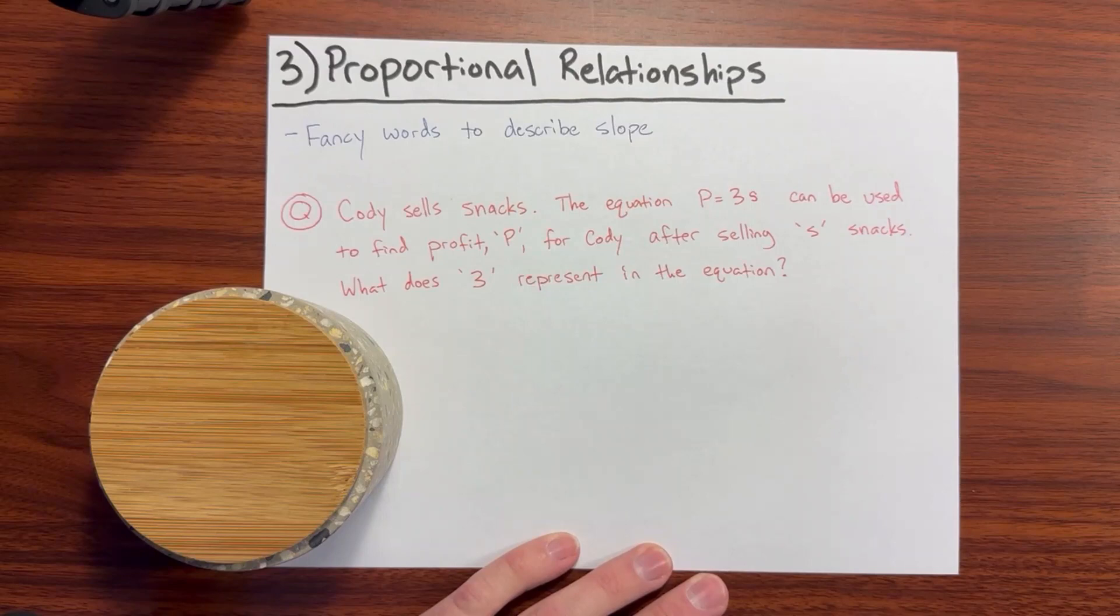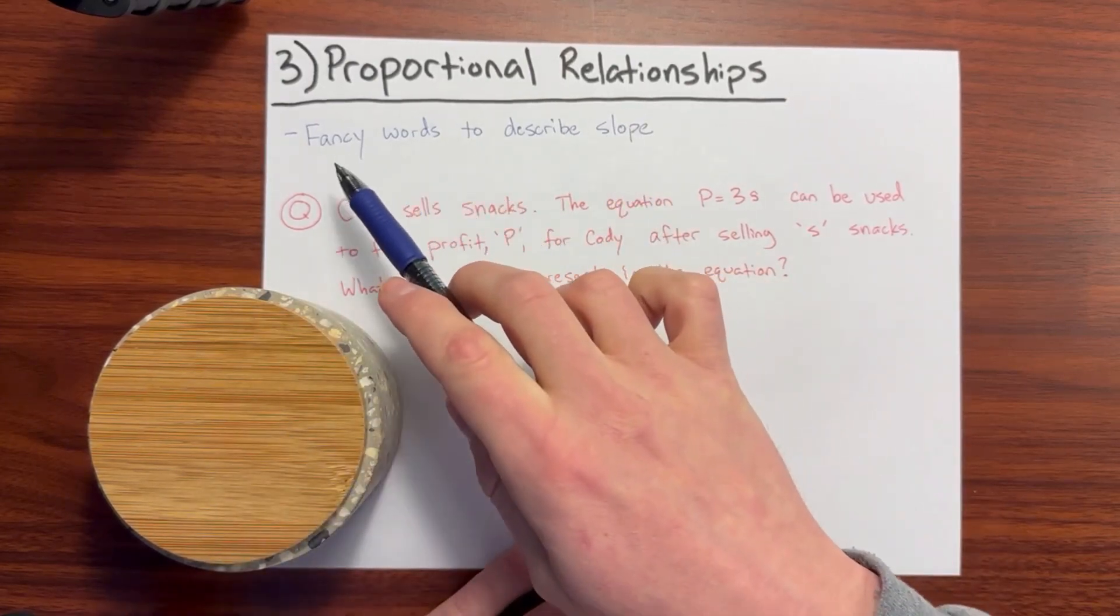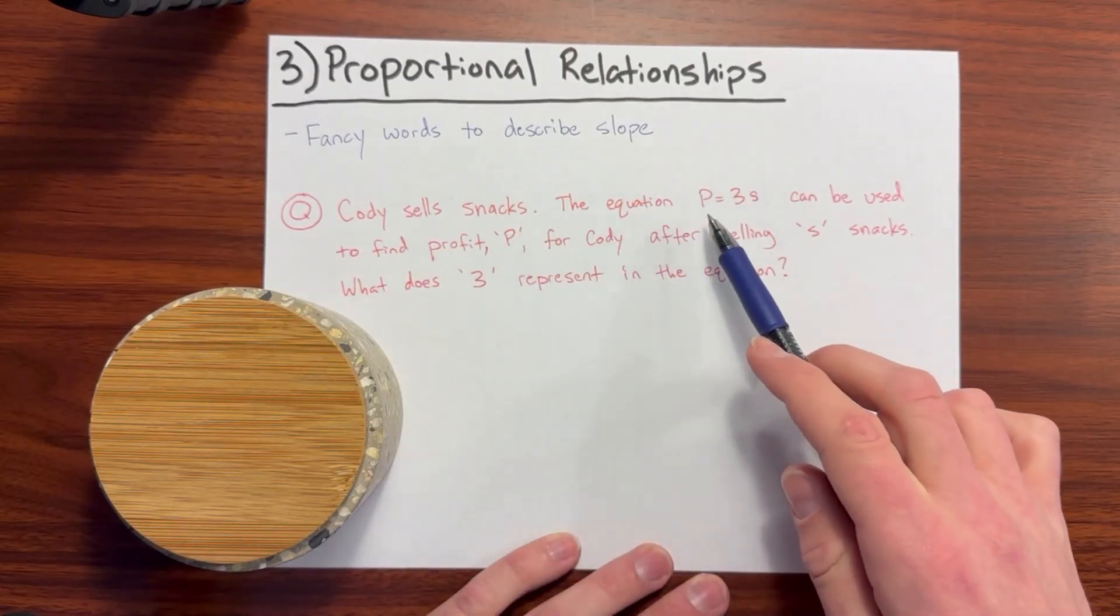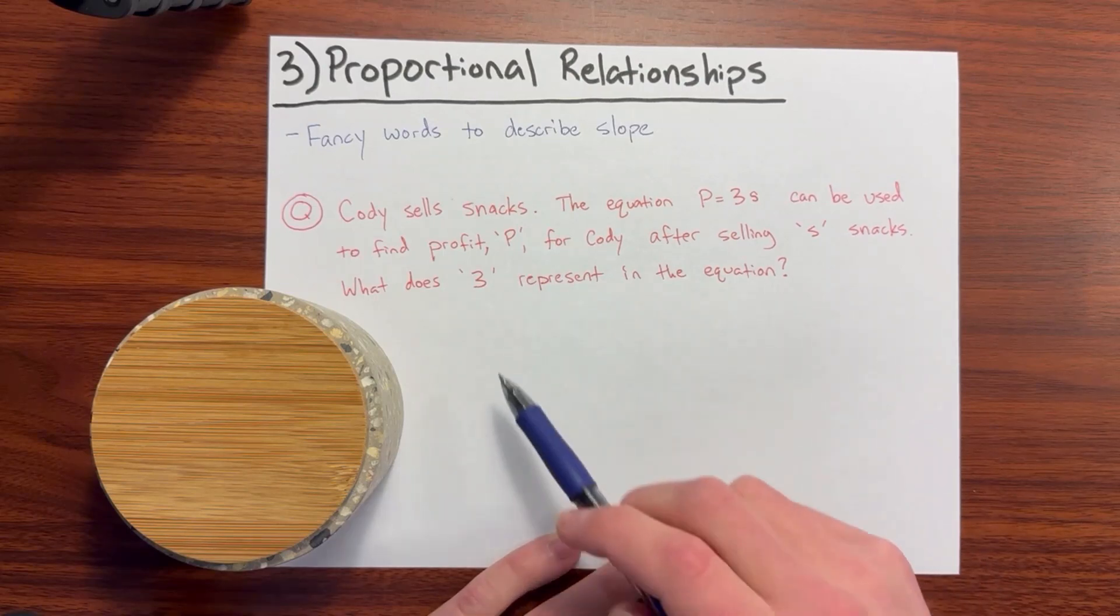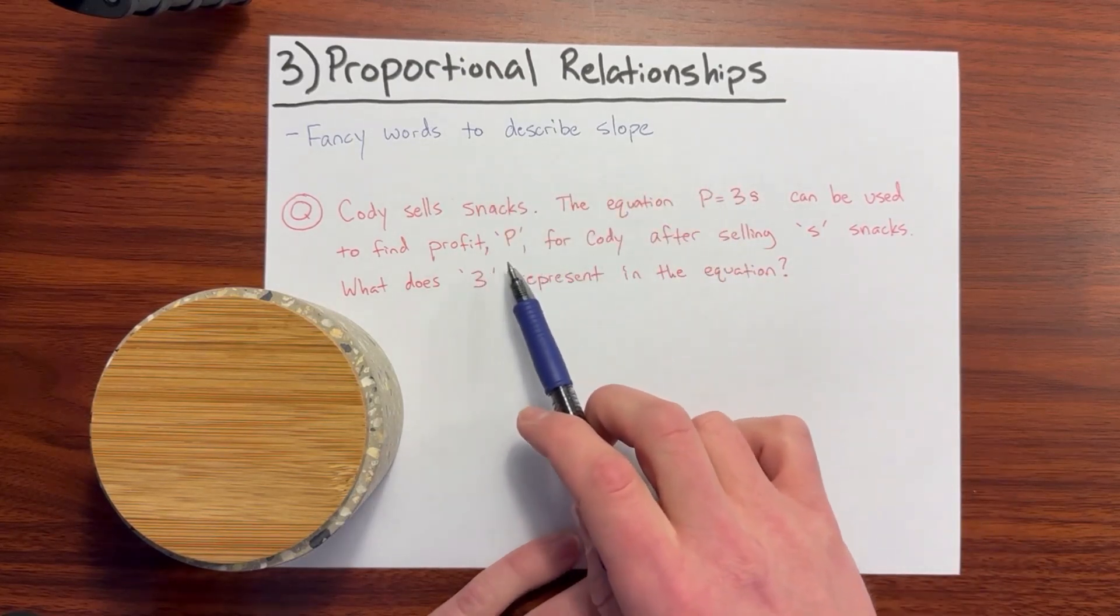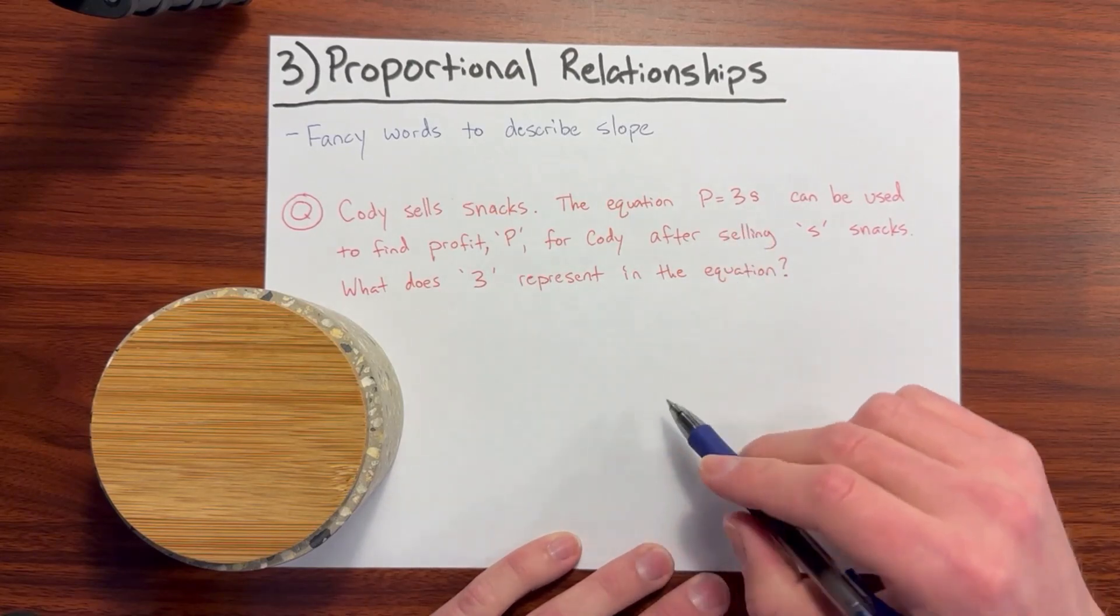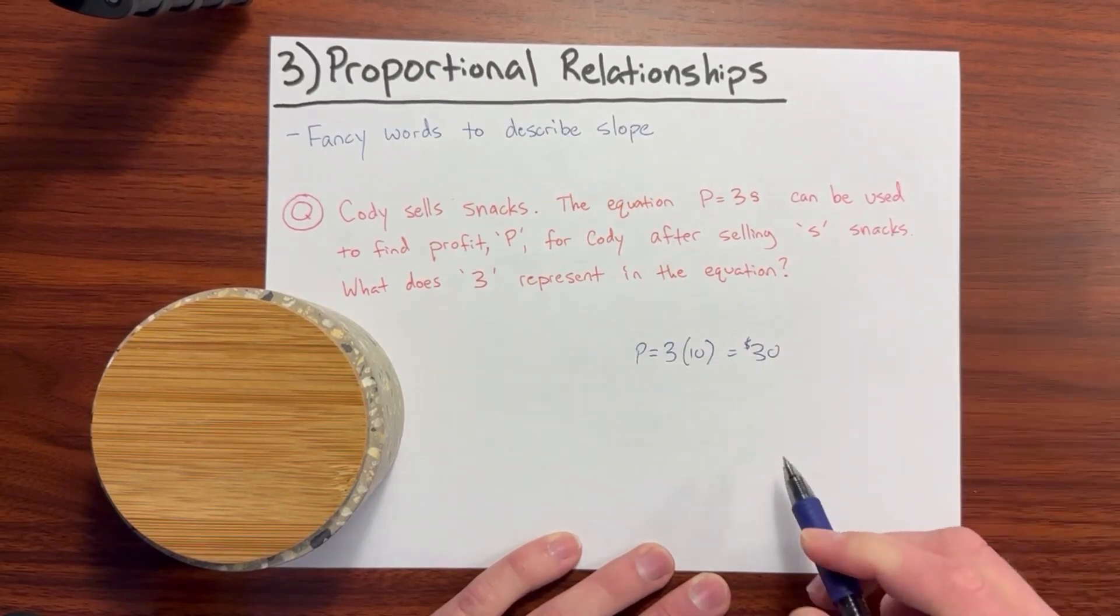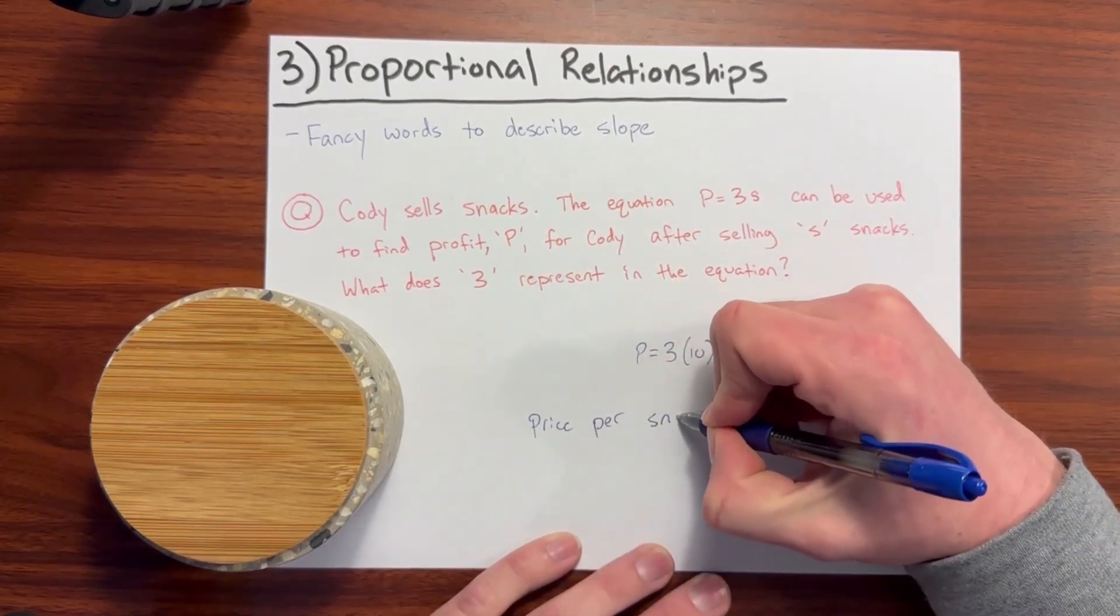Number 3: Proportional relationships for equations and graphs. A proportional relationship, all you need to know is that it's some fancy words to describe the slope. So a question could be, Cody sells snacks. The equation p equals 3s can be used to find profit p for Cody after selling s snacks. What does 3 represent in the equation? Well, 3 is the proportional relationship between Cody's profit and the number of snacks that he sells. So what does 3 represent in the equation? Well, let's say he were to sell 10 snacks and that would end up being $30. Well, it should be obvious that 3 is the price per snack in that proportional relationship.